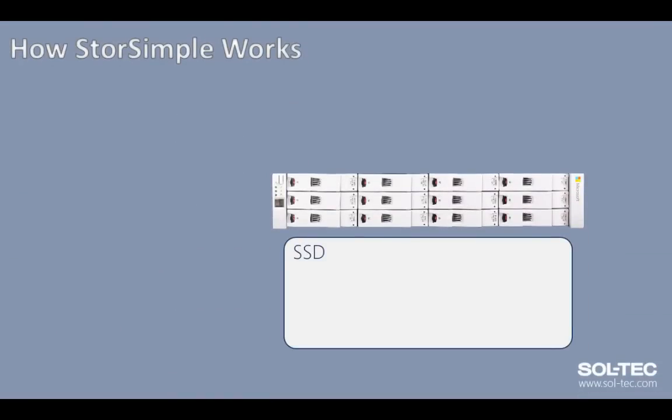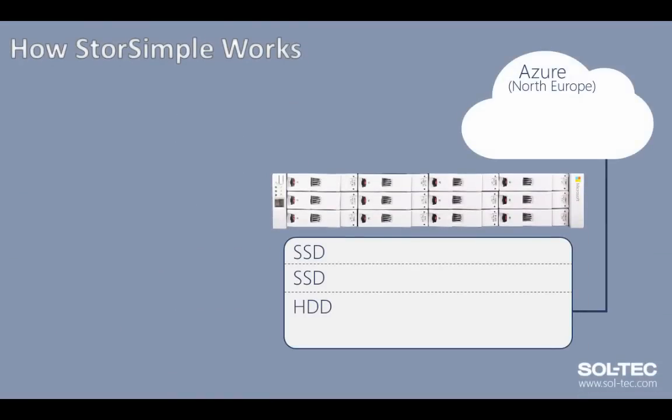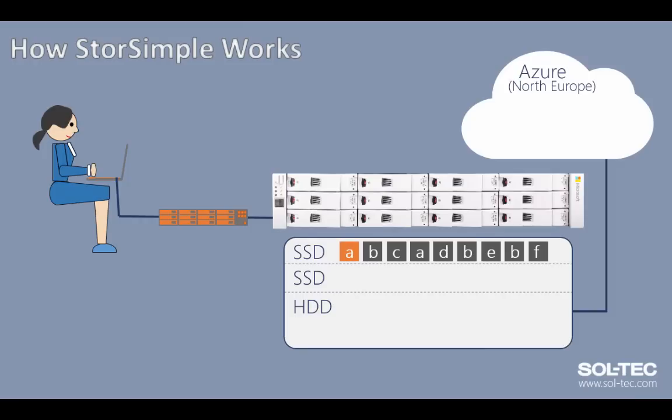StorSimple is comprised of SSDs split into two tiers, HDDs, and the cloud. The easiest way to understand how it works is to look at a user. The user creates a document, it's written across the network and goes to the top SSD tier on the StorSimple appliance, along with data from other users.